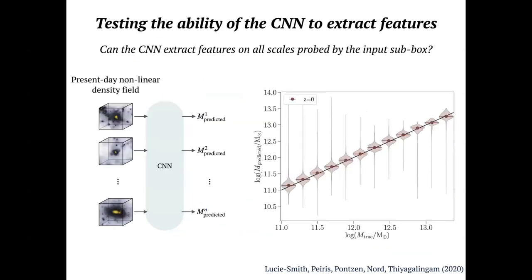A crucial assumption is that the CNN is able to extract features from smaller to larger scales within the input sub-boxes. To test this, we trained the CNN on the present-day nonlinear density field instead of the initial conditions — a case where we know all the information is there and the CNN just has to learn what the halo finder algorithm does to give you a mass.